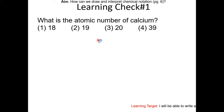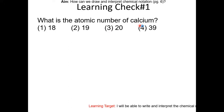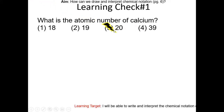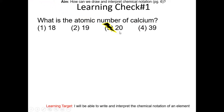If you look at the periodic table, calcium is Ca. If you don't know that, go to table S to look that up. The answer is 20 — calcium has 20 protons.